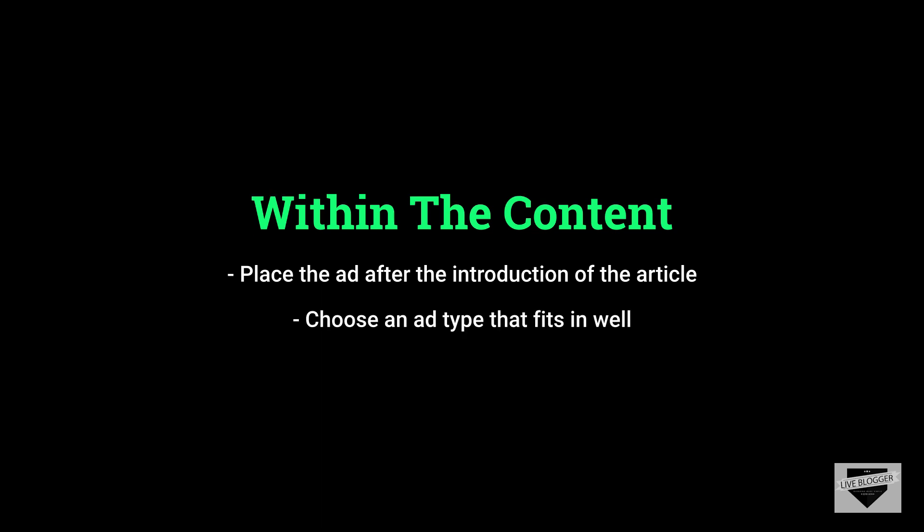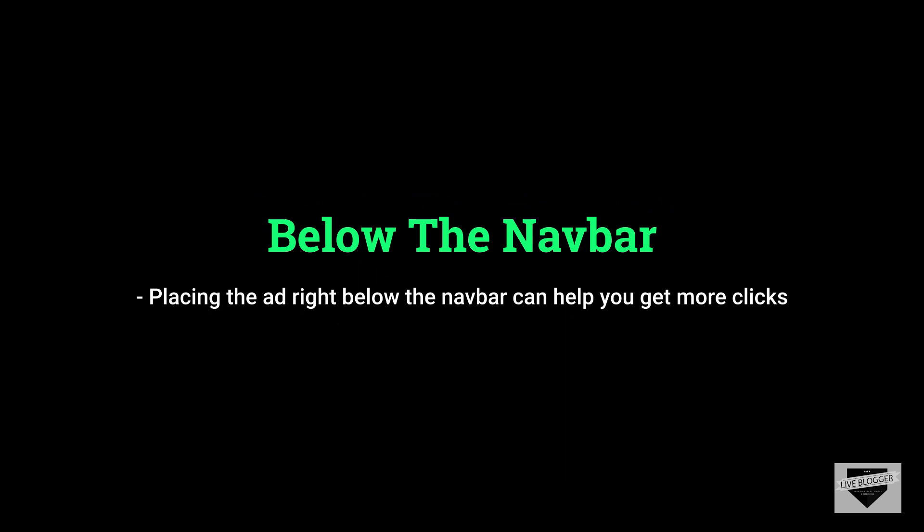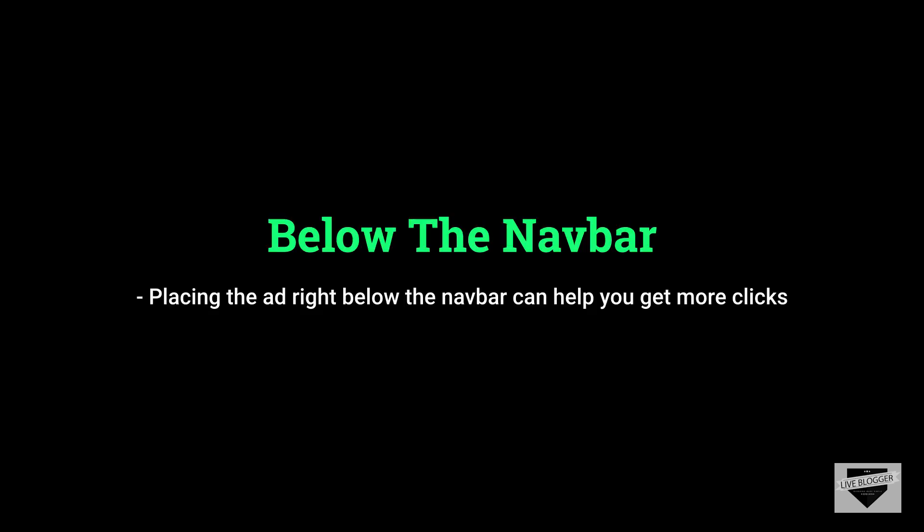There are different types of ads you can choose from inside Google AdSense — make sure that you choose the ones that fit nicely within the articles. Another place where you can place your ads is below the navigation bar of your website. All websites pretty much have a navigation bar.